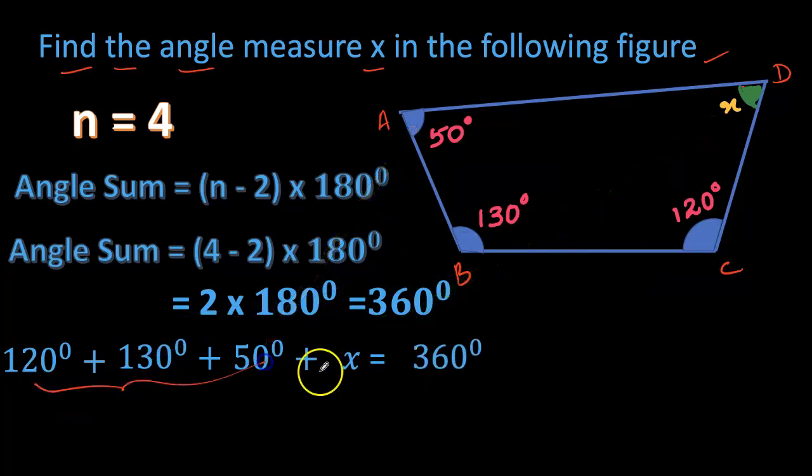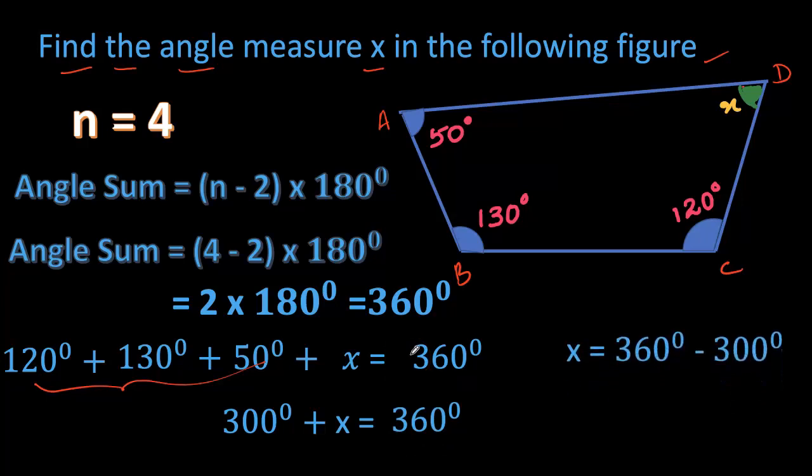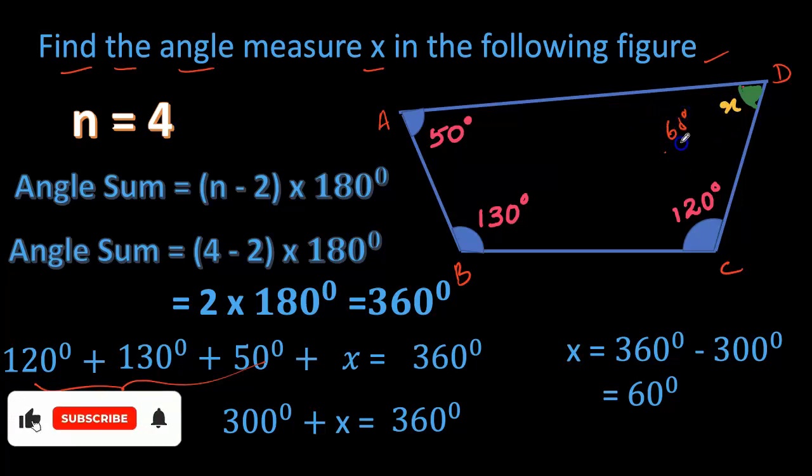Therefore x equals 360 minus 300, so it is 60 degrees. So the value of x is 60 degrees. I hope it's clear, thanks for watching.